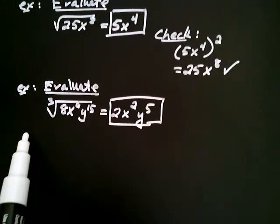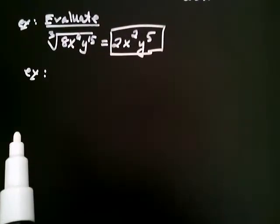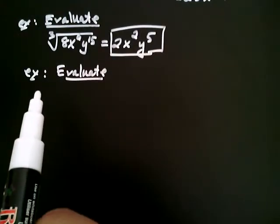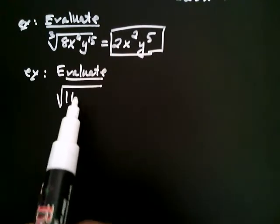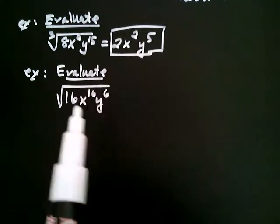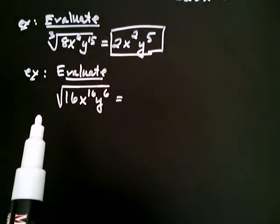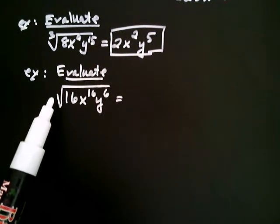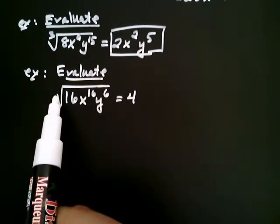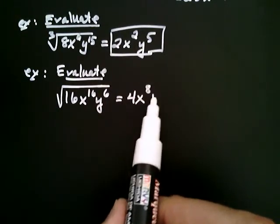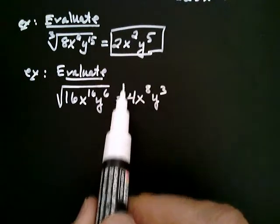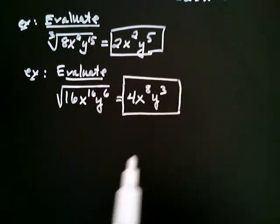Let's go back to square roots for a moment. Evaluate the square root of 16x to the sixteenth, y to the sixth. The index is two, and the square root of sixteen is four. For the exponents it's division: sixteen divided by two is eight, so it's x to the eighth. And six divided by two is three, so y cubed. I'm going to put a large box around this one, because we're going to come back to it in a moment after the following observation.